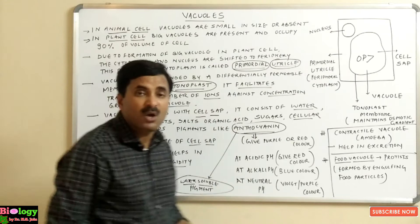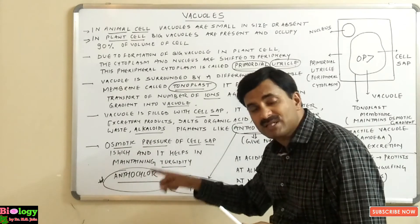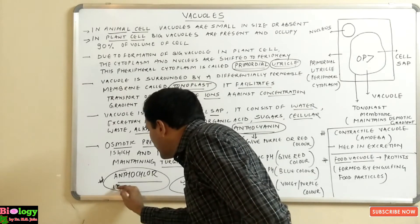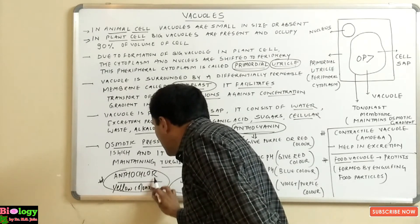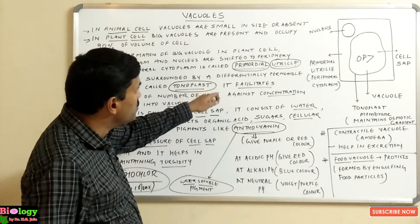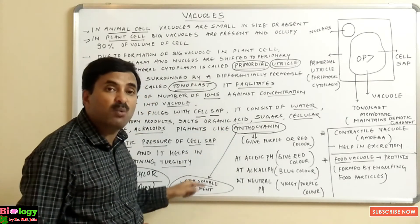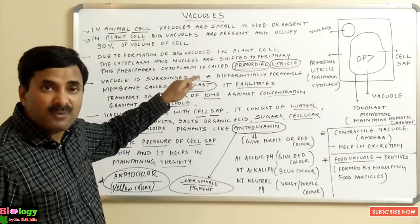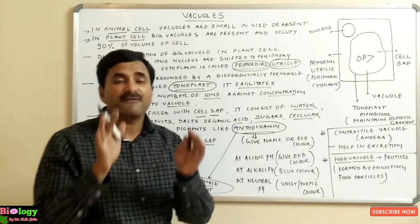One more pigment is present in the cell sap, known as anthochlore, which is a yellow-colored pigment. You must know that these pigments found in the vacuole — especially the anthocyanin pigment — are water-soluble pigments.